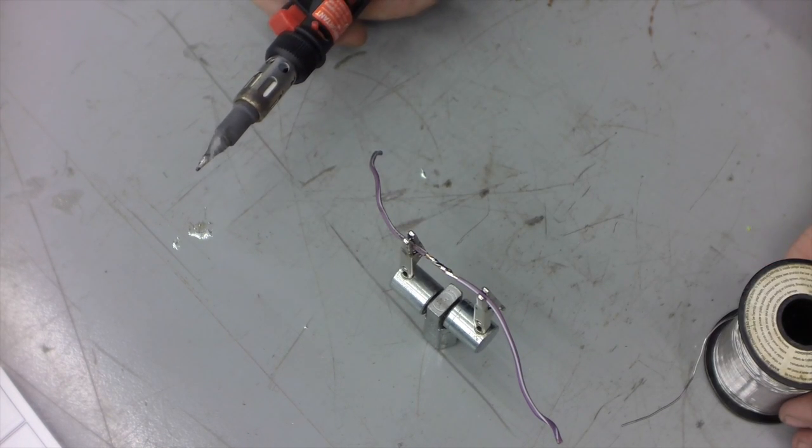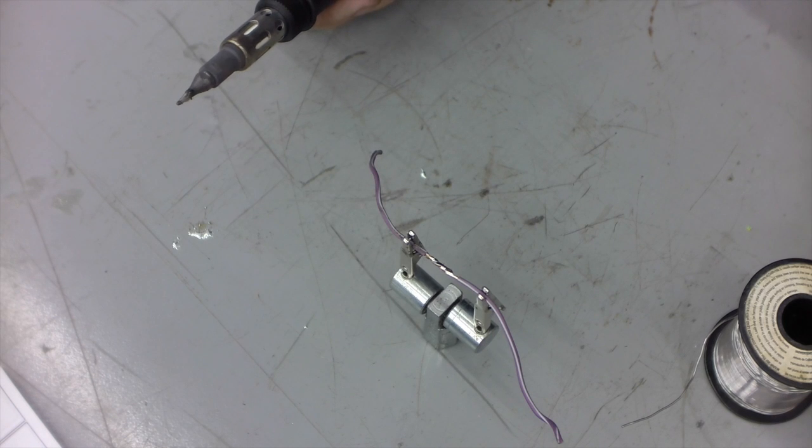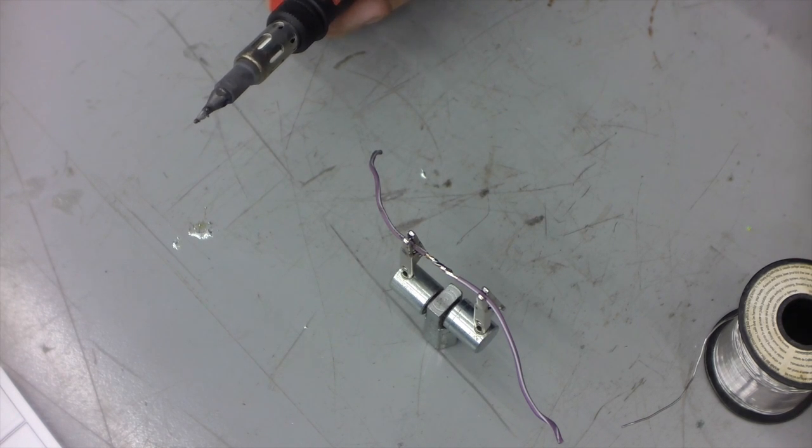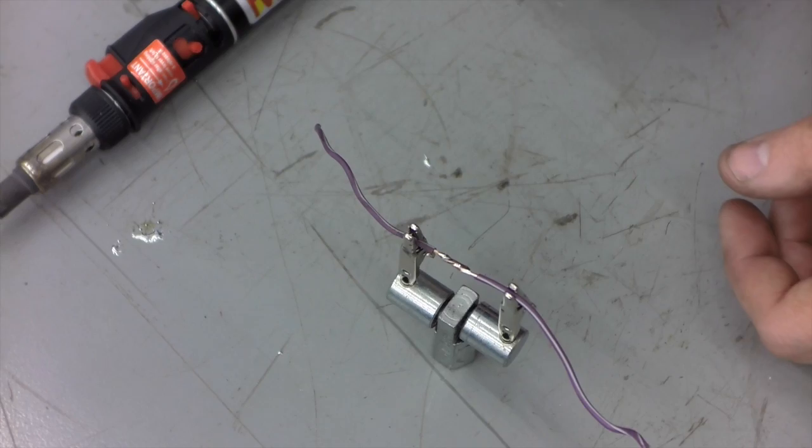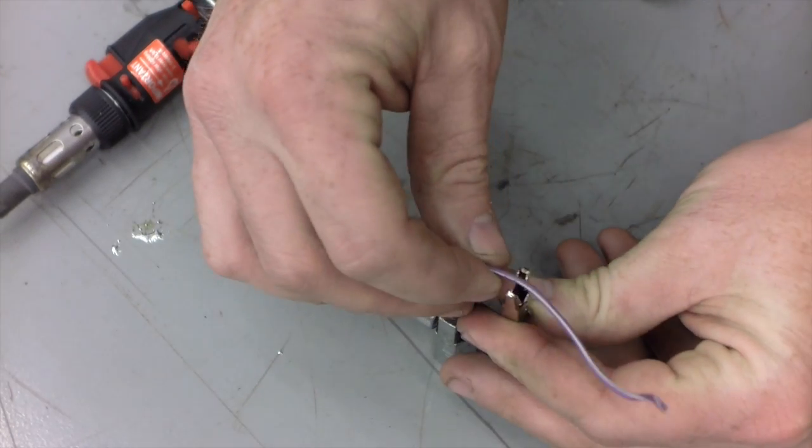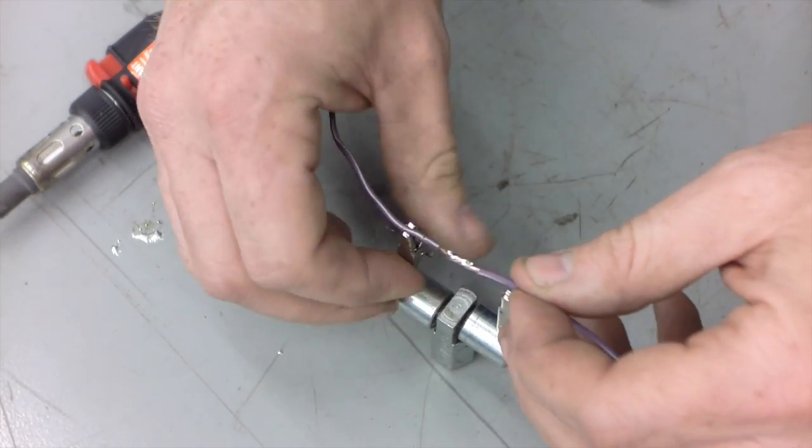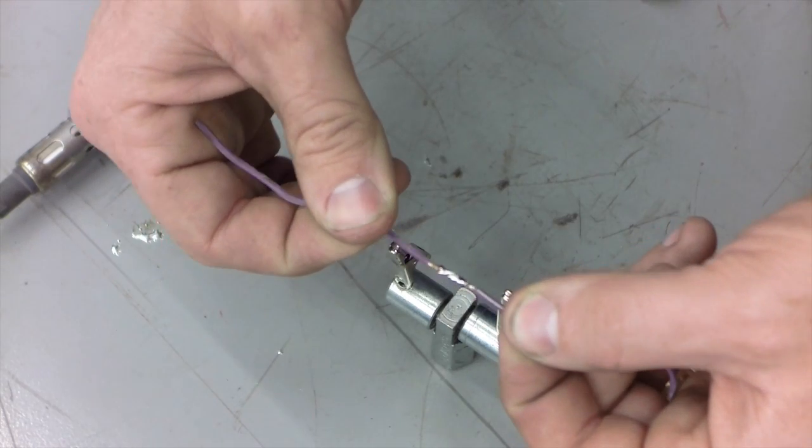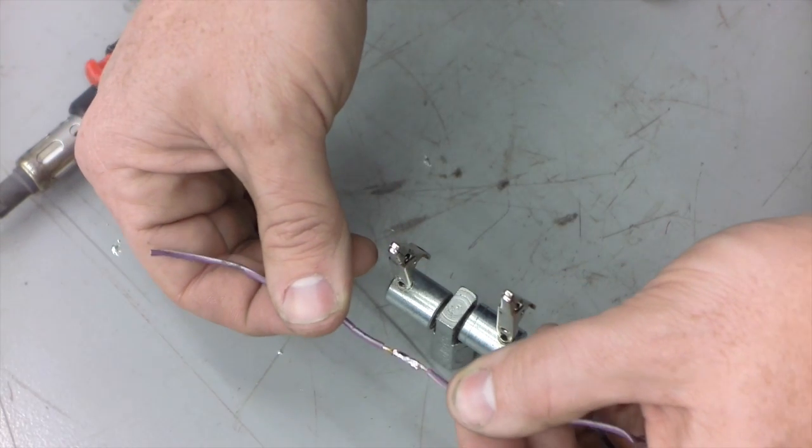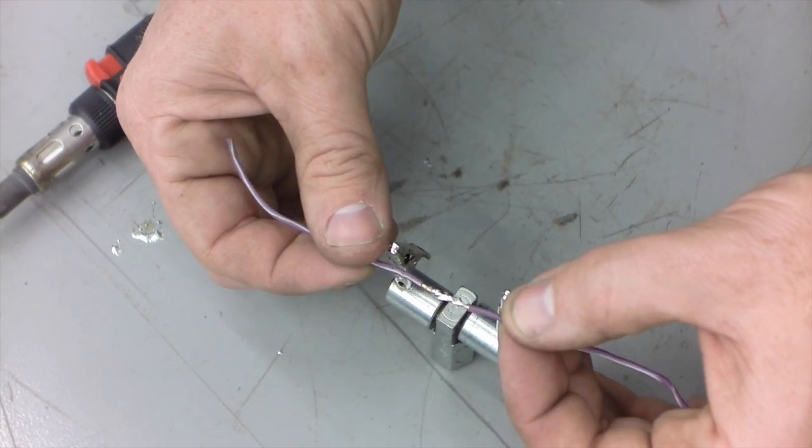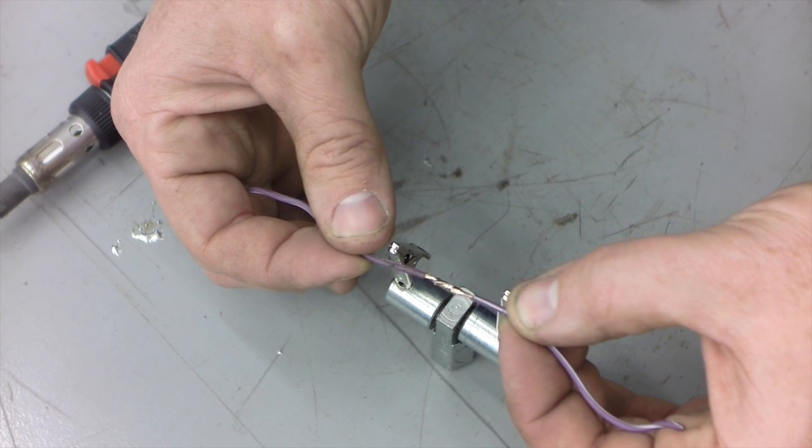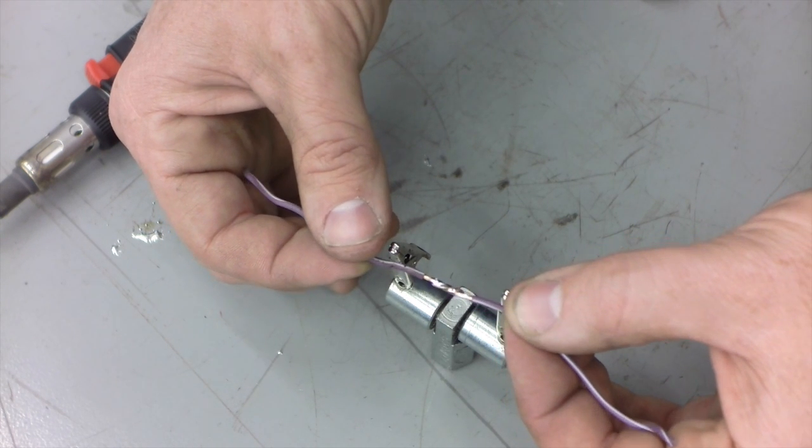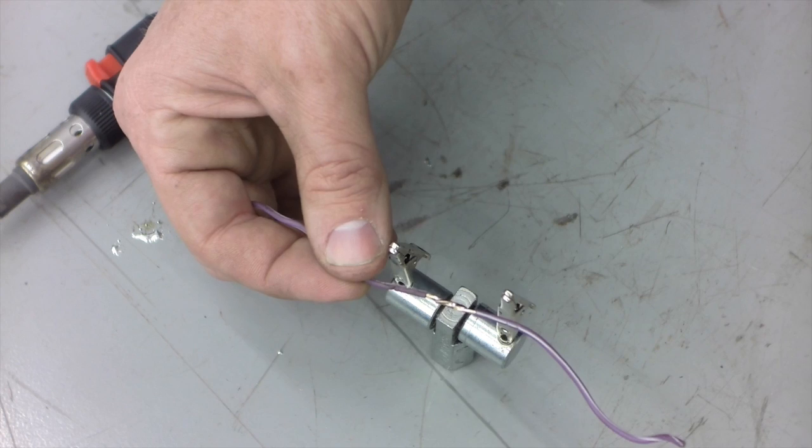Now that we're done pouring solder on the wire, what we're going to do is remove it from the helping hand and just inspect. What I'm looking for in a solder joint is to make sure it's uniform, make sure the diameter of the solder joint does not significantly exceed—or really exceed at all—the diameter of the insulation on the wire. And I'm also going to check for burrs or snags.